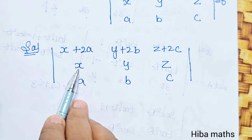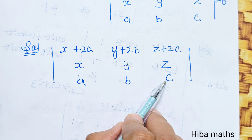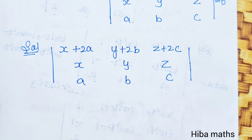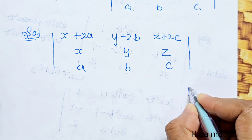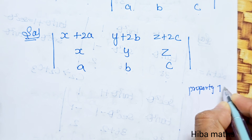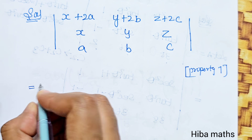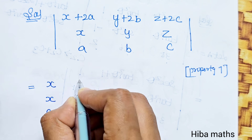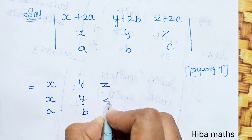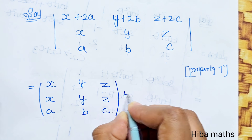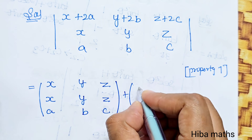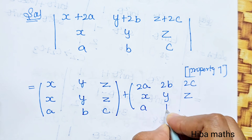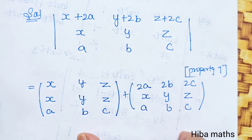If we solve it in the matrix, we have to solve x, y, z with the rows. Using Property 7 of matrices, we split the first row: terms x, y, z and a, b, c form one matrix, plus 2a, 2b, 2c split into a second matrix. This is one property we use.